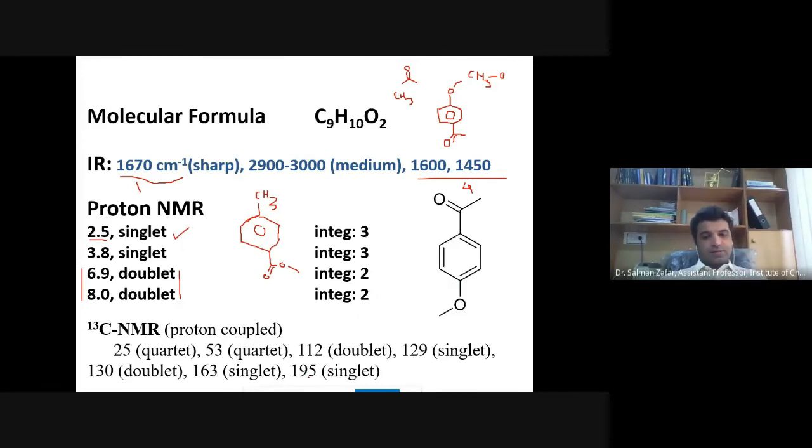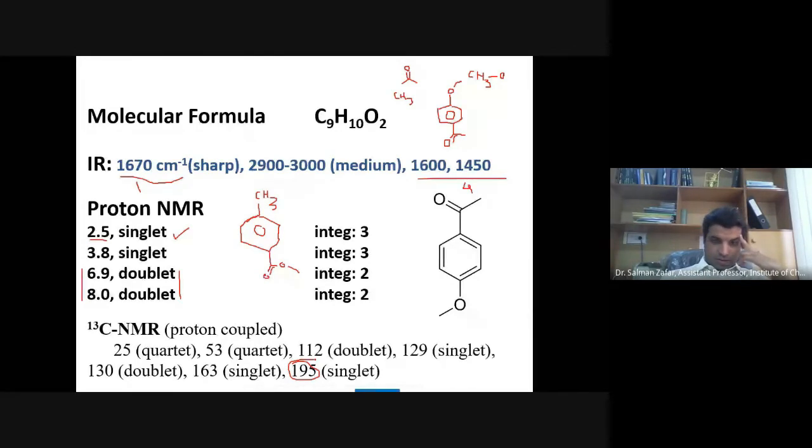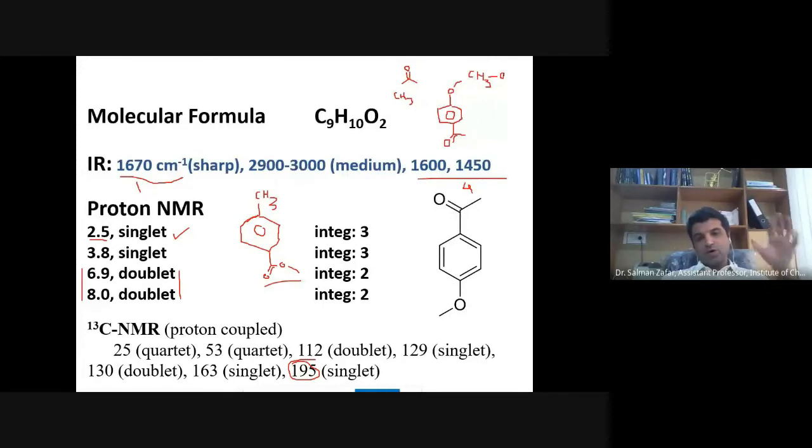195 is a ketone. This is also an indication. This peak at 195, this is for the ketone. It's not for the ester. So we have an ester here, it will not appear around 195. Conjugated ketone, yes, it may appear around 195. One reason.